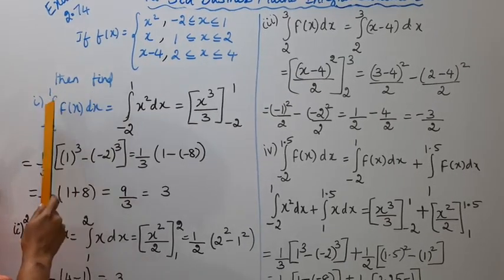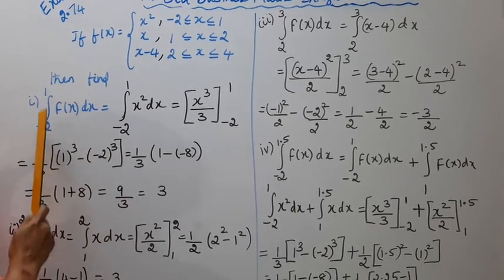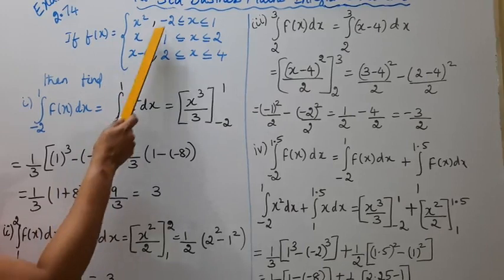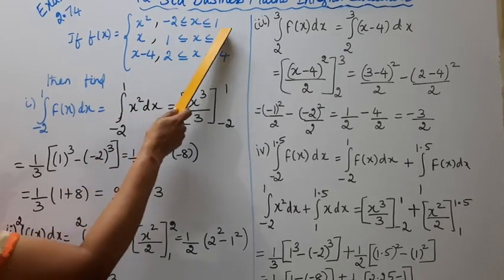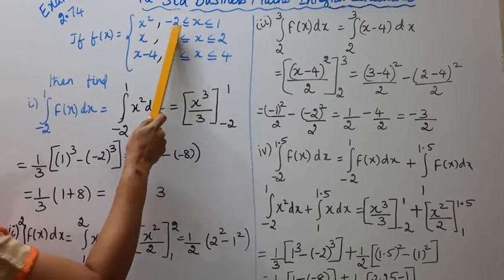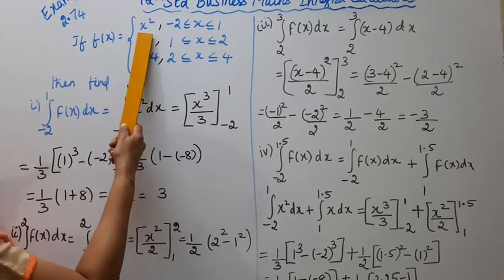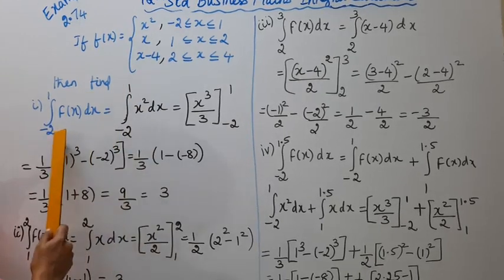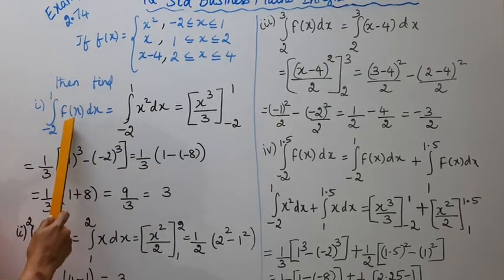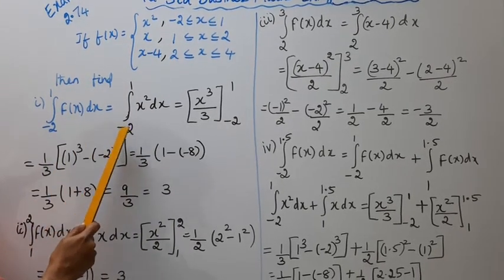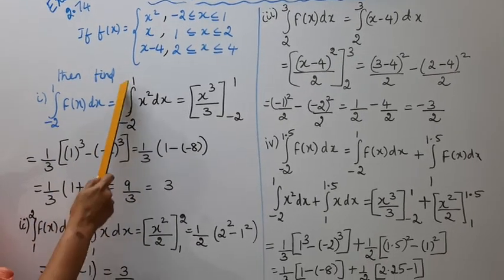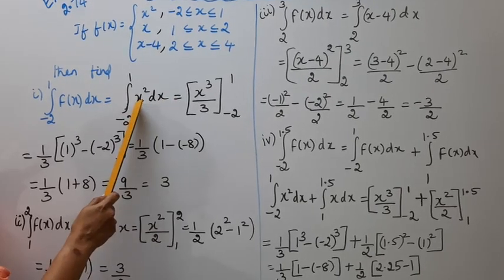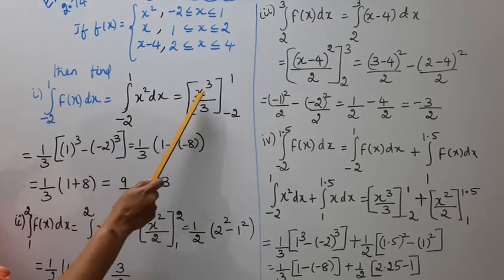First subdivision: find integration from minus 2 to 1 of f of x dx. From minus 2 to 1, f of x is x squared. So we evaluate the integral from minus 2 to 1 of x squared dx. Integrating x squared gives x cubed by 3.